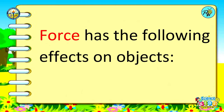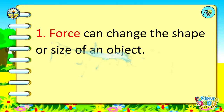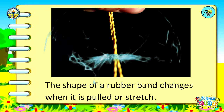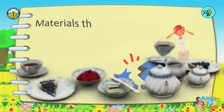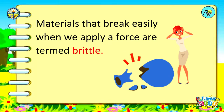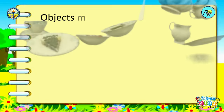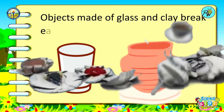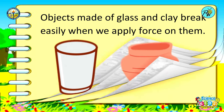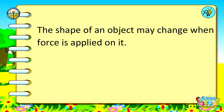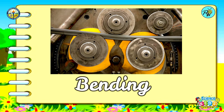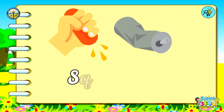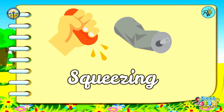Force has the following effects on objects. Force can change the shape or size of an object. The shape of a rubber band changes when it is pulled or stretched. You can also break things by applying a force. Materials that break easily when we apply a force are termed brittle. For example, objects made of glass and clay break easily when we apply force on them. The shape of an object may change when force is applied on it. Pushing, pounding, compressing, bending, twisting, stretching, or squeezing are some ways of changing the shape of an object.